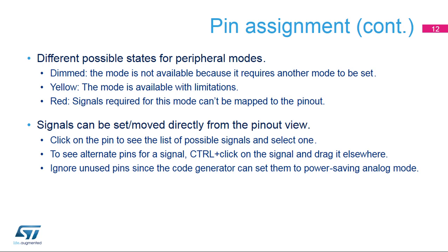Signals can be set or moved directly from the pinout view. Click on the pin to display the list of possible signals and select one — this works for GPIOs which have no peripherals assigned. To see alternate pins for a signal, hold the control key and click on the signal. You can then drag and drop the signal to the new pin while holding the control key.